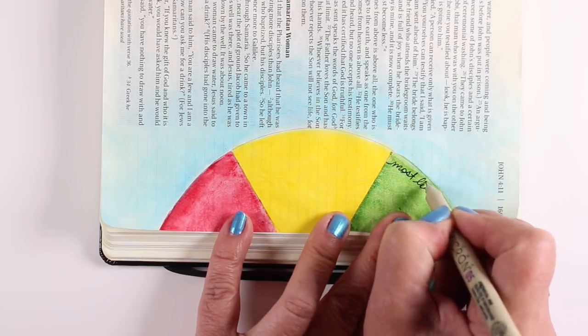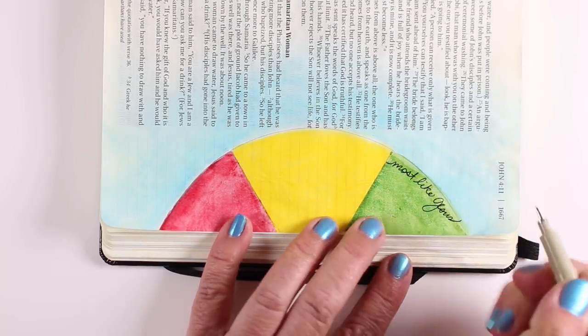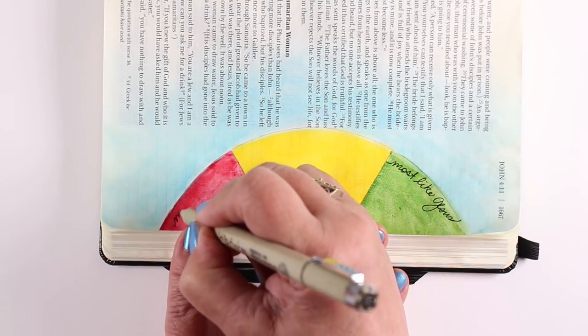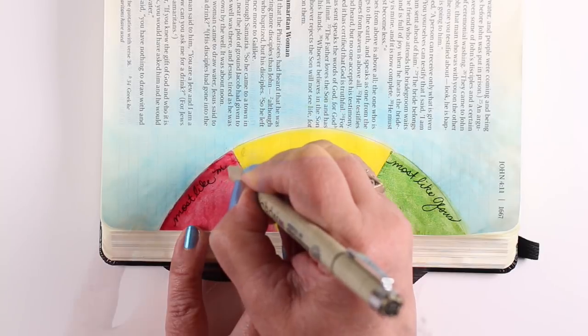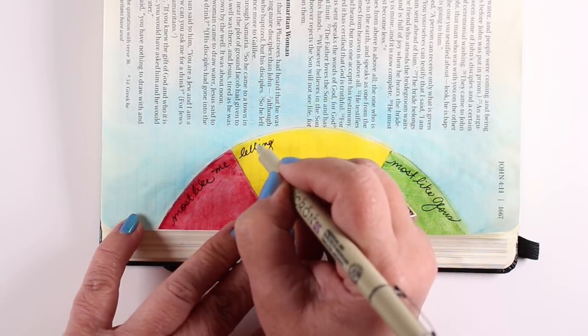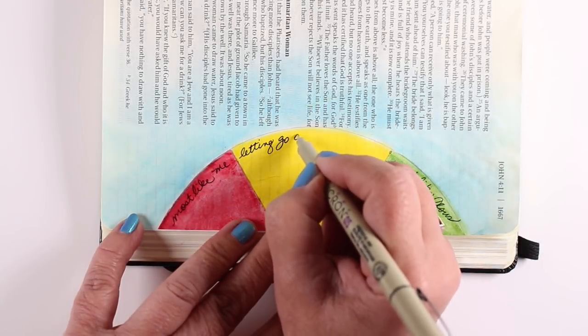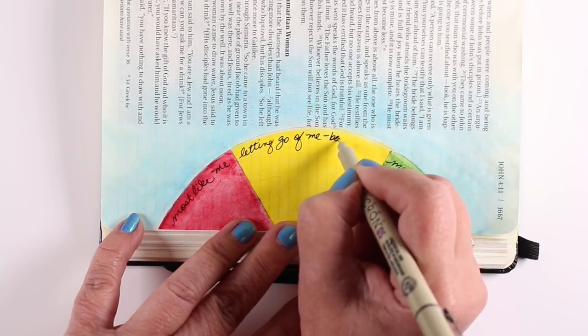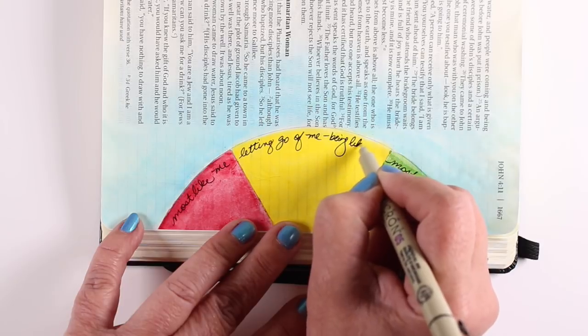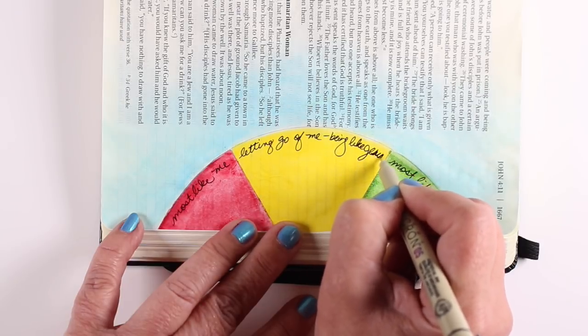So I ironed it, which I iron just a couple seconds on like cotton setting and then started putting in my text. The green part is when I'm mostly like Jesus, which is not very often. The red part is when I'm mostly like me. And then the middle is a range, letting go of me and being more like Jesus.